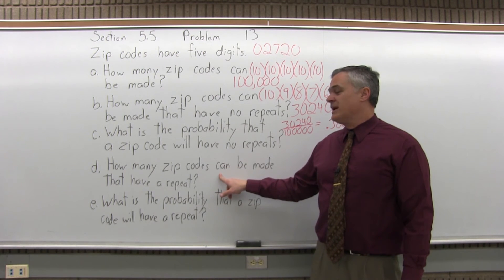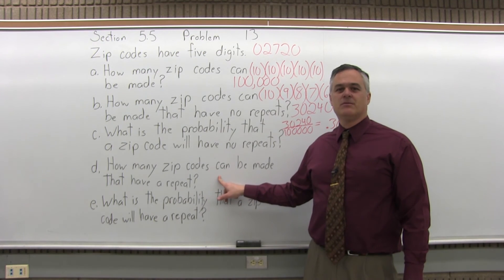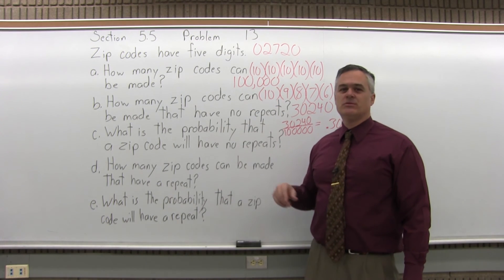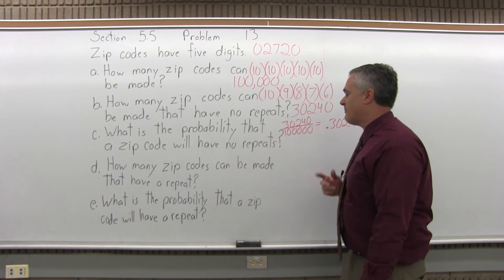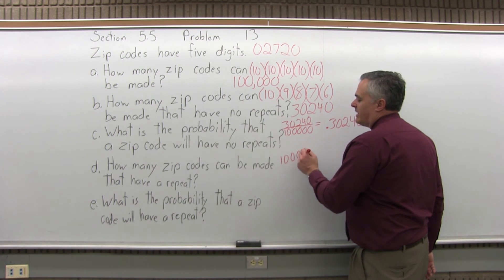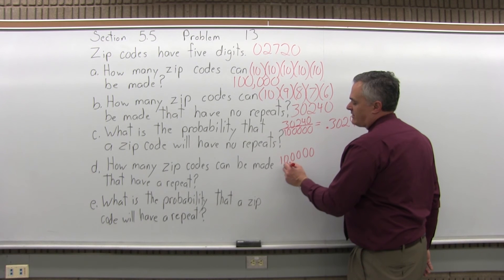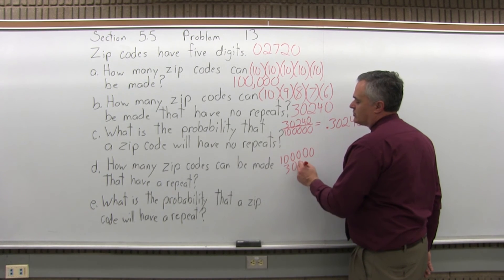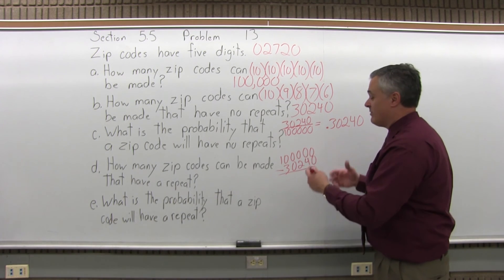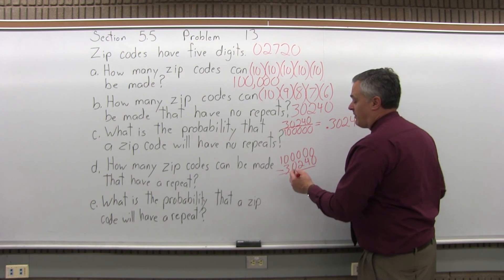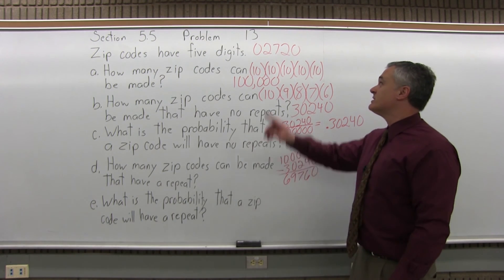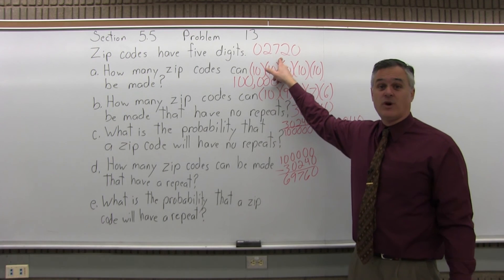Part D, how many zip codes can be made that have a repeat? Well, we don't really have the multiplication rule to help us with that, but I do know that there are 100,000 zip codes altogether, and of those 100,000, 30,240 have no repeats. So if I subtract them, the remaining zip codes must have repeats. You would have 69,760 zip codes possible with some type of repeat, like the one for Fall River.